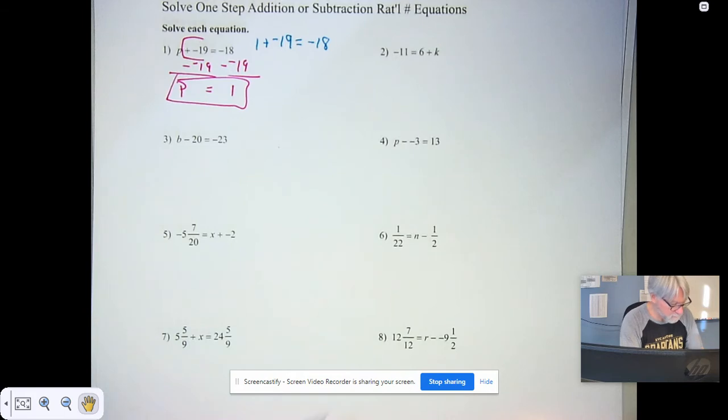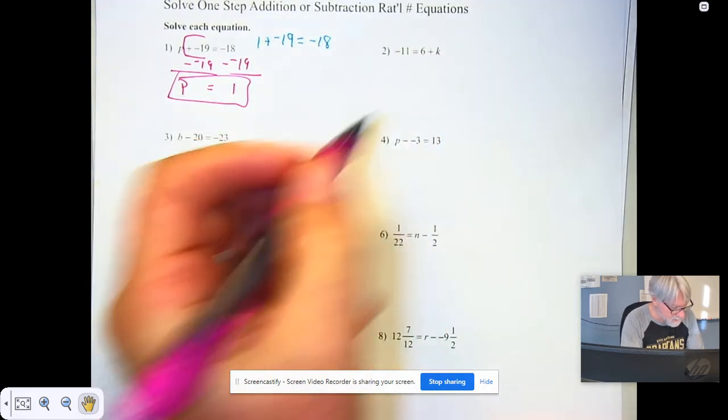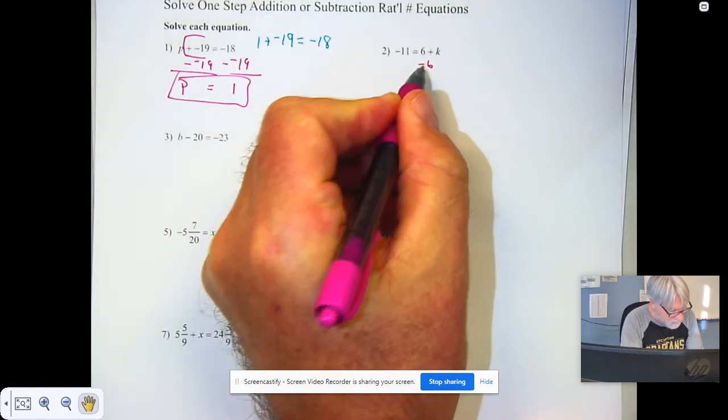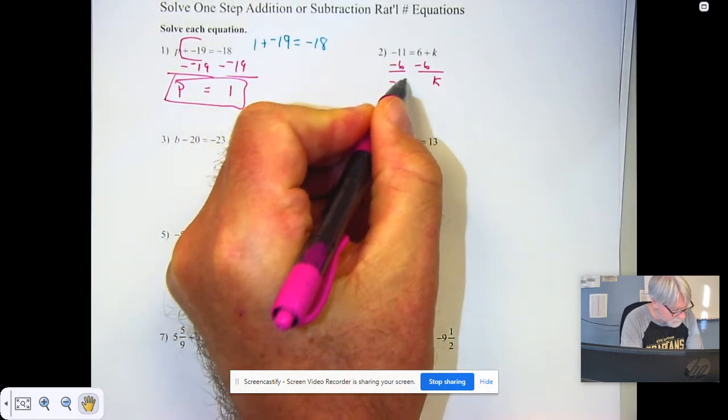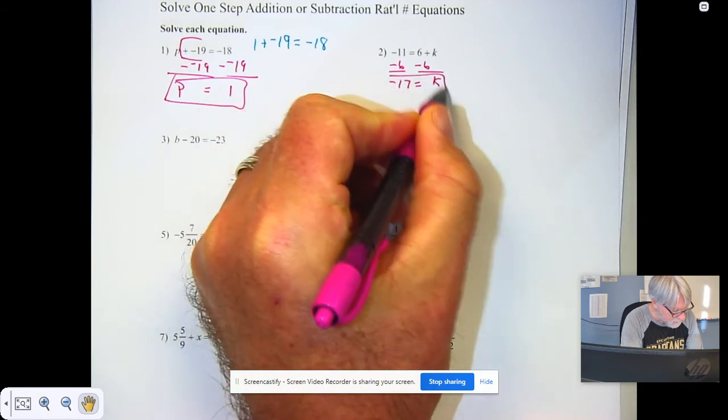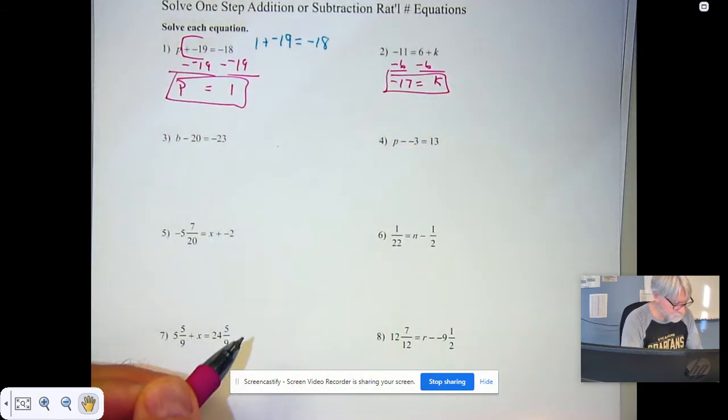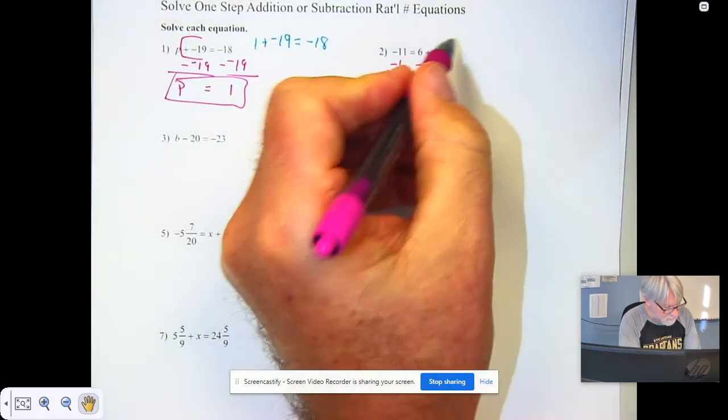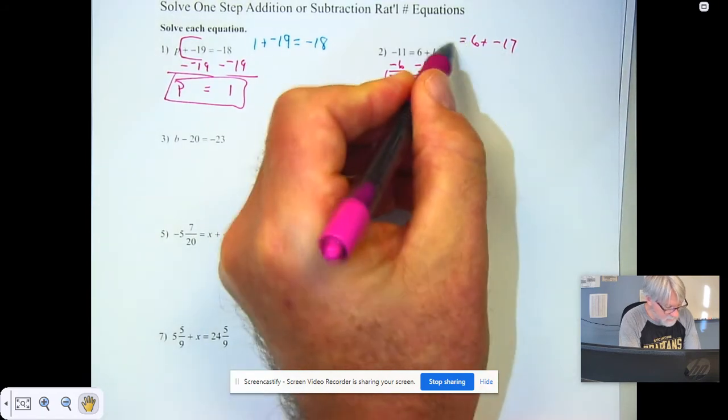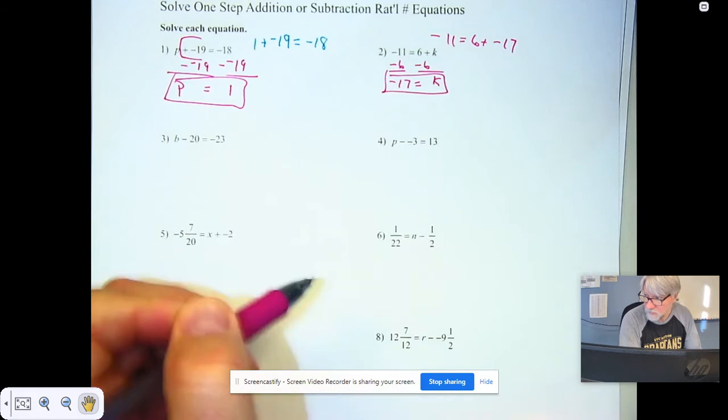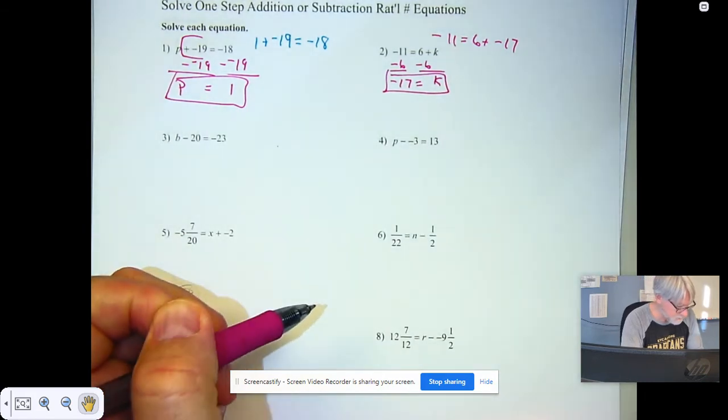Number two: the variable k has 6 added to it. If we subtract 6 we get k. If we subtract 6 we get negative 17. Again, 6 plus negative 17 does in fact equal negative 11, so it checks.